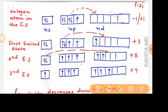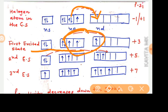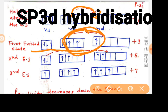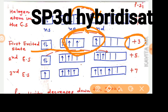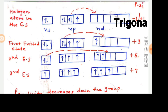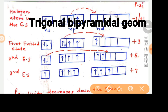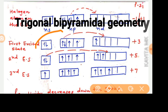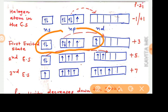The first excited state happens when the outermost electron jumps to the outermost d orbital. When this happens we get the first excited state and the number of unpaired electrons rises to three. These three unpaired electrons can be used to make three bonds, and the hybridization in this case is sp3d.